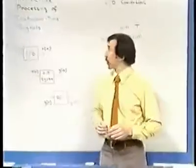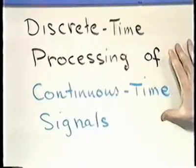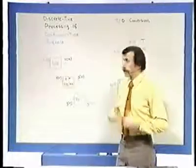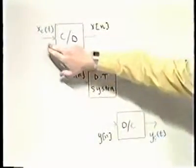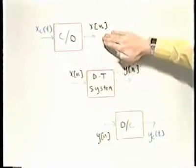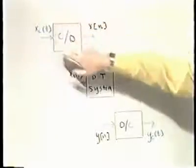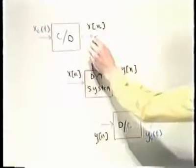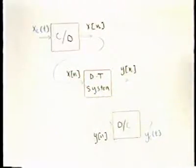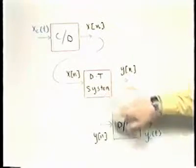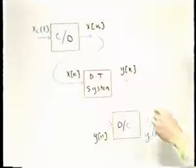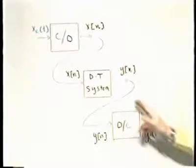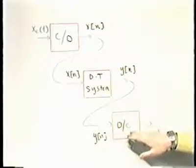Last time, we began the discussion of discrete time processing of continuous time signals. As a reminder, the idea was that we convert from a continuous time signal to a sequence through an operation which I represent as a continuous to discrete time converter. That sequence is then used as the input to an appropriate discrete time system, and after appropriate discrete time processing, that sequence is converted back to a continuous time signal through a discrete to continuous time converter.